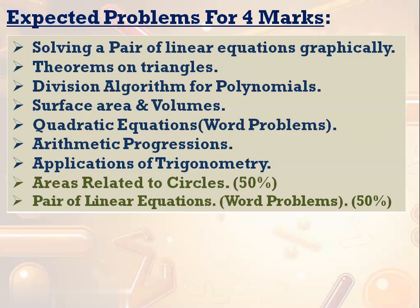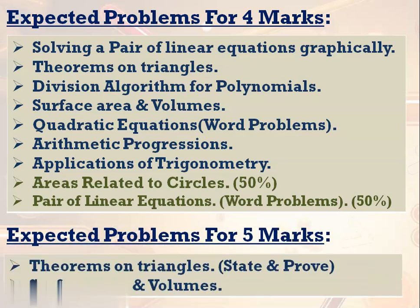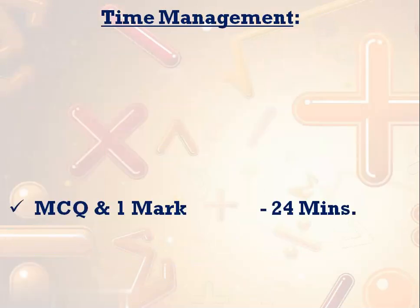There is about 50% probability of getting a question from those two topics. For the 5-mark question: if the 4-mark question is from triangles, then the 5-mark will go to surface area and volume. If the 4-mark is from surface area and volume, then the 5-mark will go to theorems in triangles.